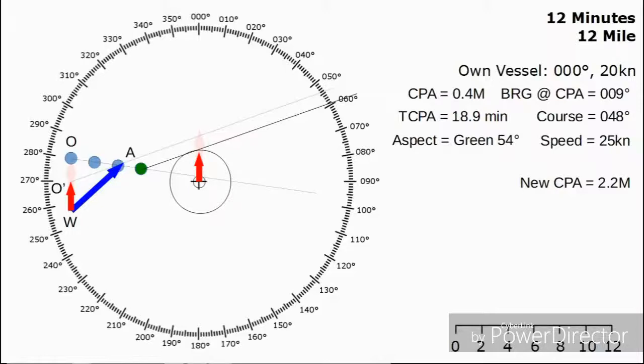Then we want our new time to the closest point of approach. Now this is a multi-step process again. First off, we've got to get the baseline figure, which is the distance from O prime to A, which in this case is 4 miles. We know that that has been covered in 12 minutes.